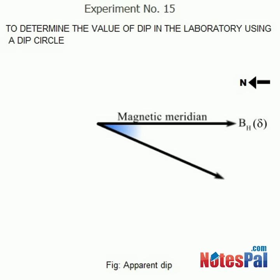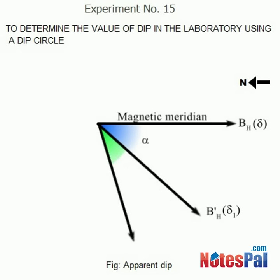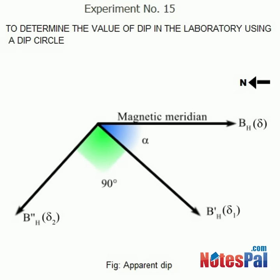The dip circle is set in two perpendicular positions and the apparent angles of dip are measured. If delta 1 and delta 2 are the apparent angles of dip in the two positions, then the true dip is given by: cot squared delta equals cot squared delta 1 plus cot squared delta 2.